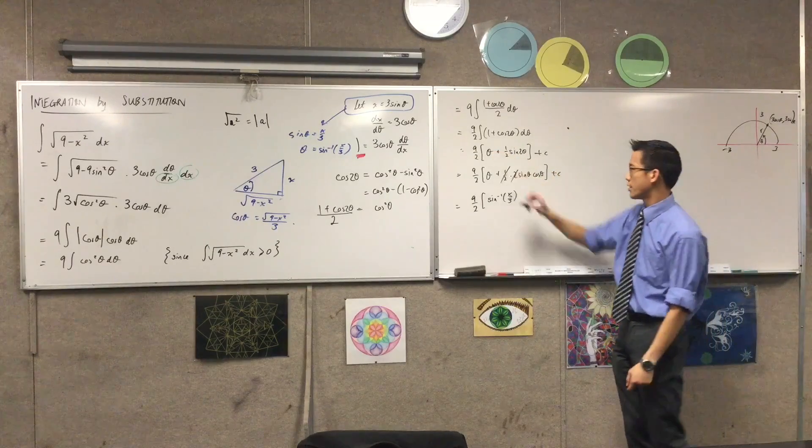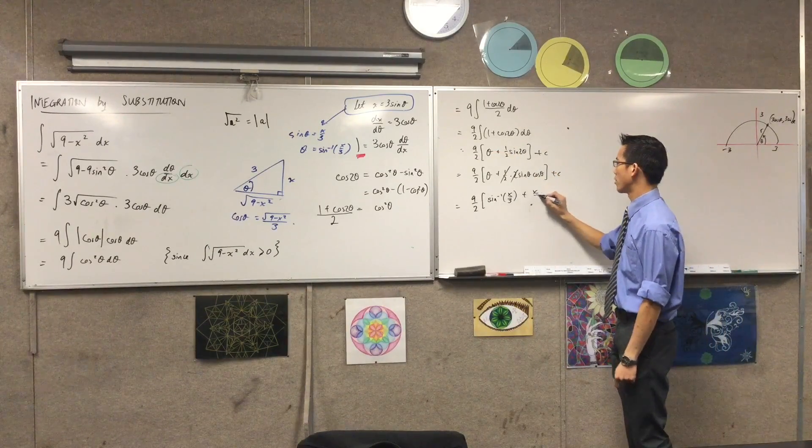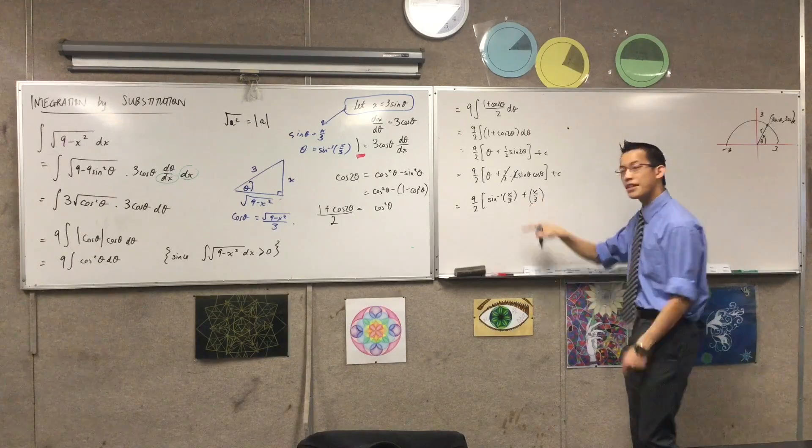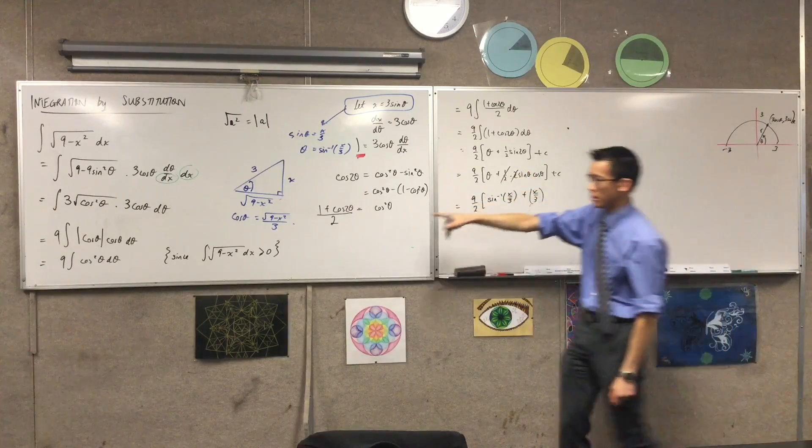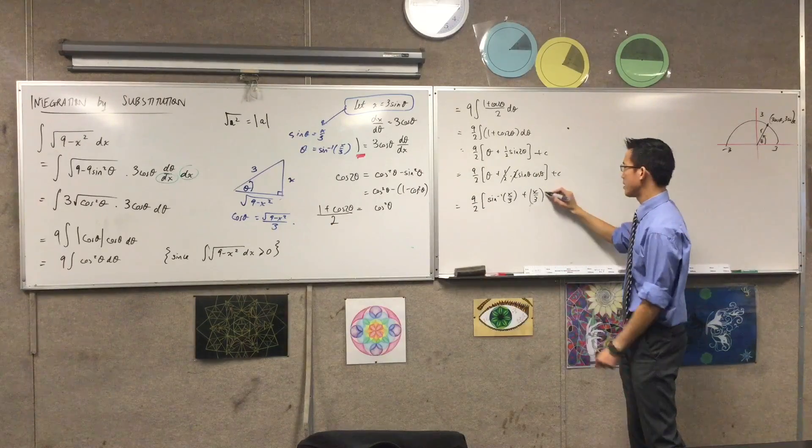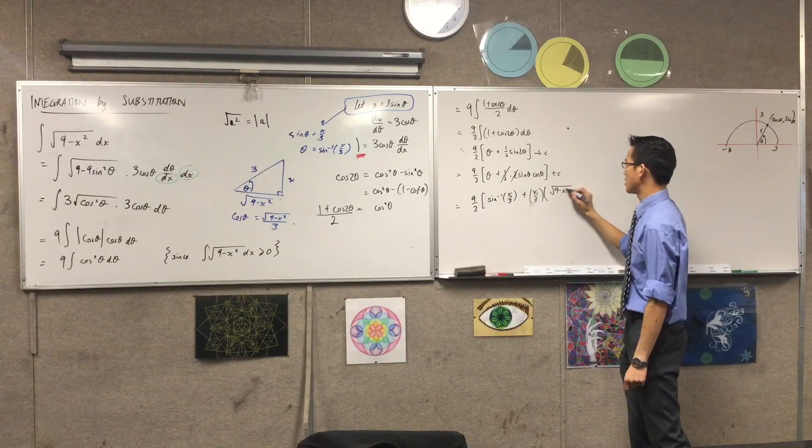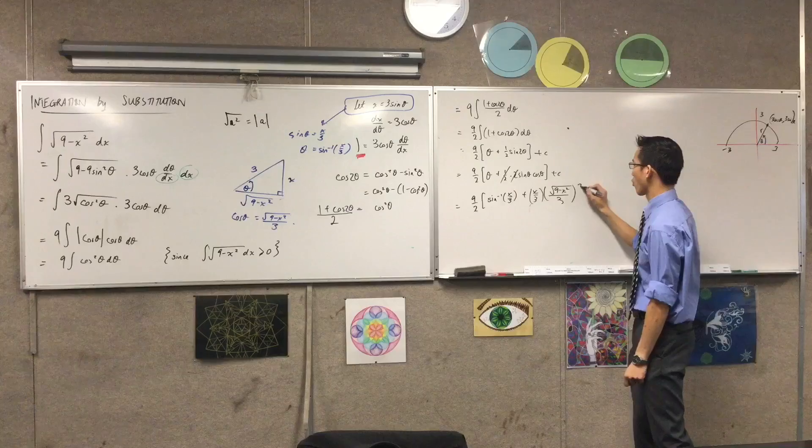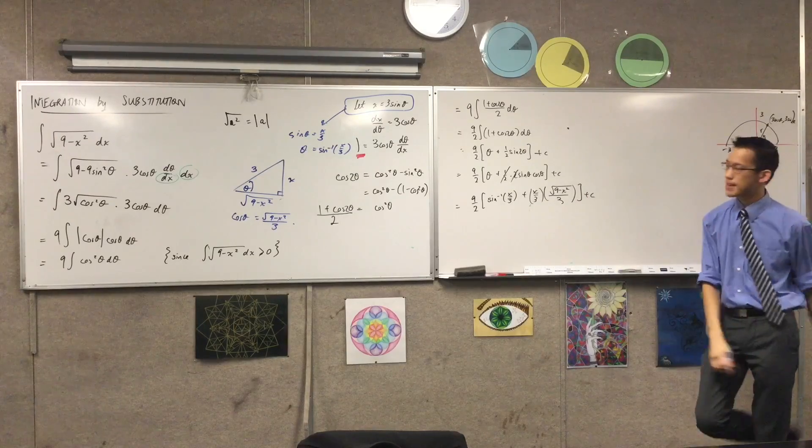Sine theta, I already know that's x on 3, so I'm going to put that in there. And then cos theta, which I just determined, is here. So, we're going to multiply it through by that. That is the square root of 9 minus x squared on 3, plus my constant.